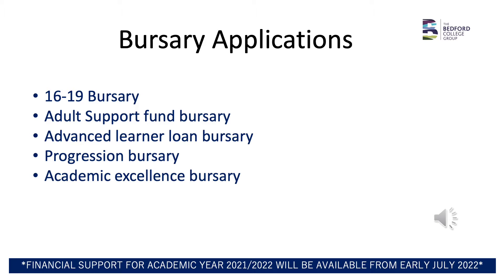There are five college bursaries. Depending on your circumstances such as age, level of course and type of course, you may be eligible to apply for one of the following: the 16 to 19 bursary, the adult support fund, the advanced learner loan bursary, the progression bursary, or the academic excellence bursary.